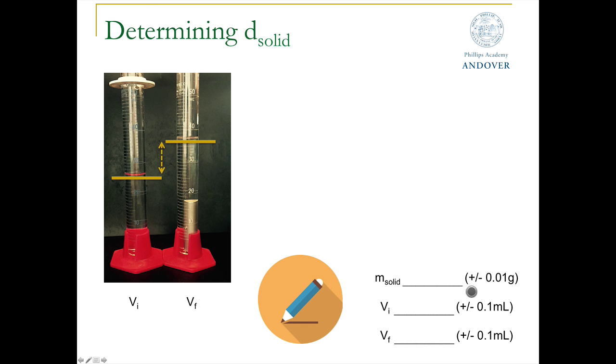These numbers here indicate the accuracy with which we want you to record this data to. So this hundredth of a gram means we want you to record the mass to the nearest hundredth of a gram. That indicates that you're going to use the top loading balance rather than the analytical balance, which would measure the mass to the nearest ten-thousandth gram. Once we have the mass, we need the volume of the solid to calculate its density.